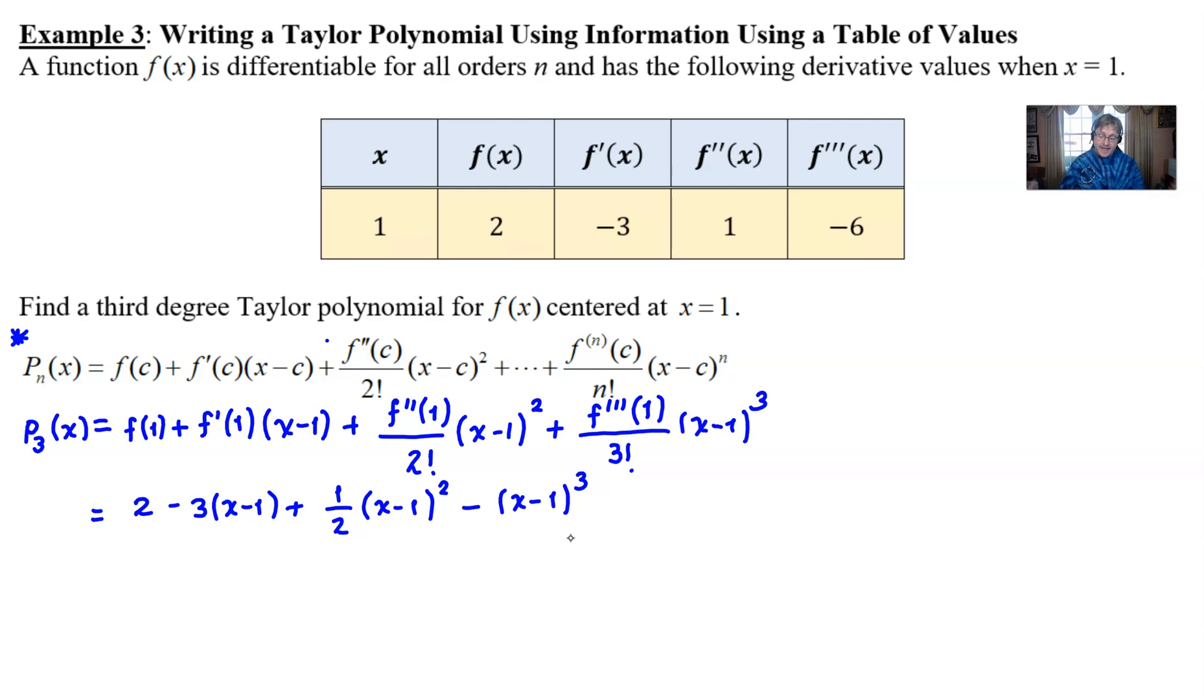And that's it. That's how you would write a Taylor polynomial given a table of values. It's a very easy way to do it. It's sometimes asked of you because it's quick. And it's testing your knowledge of the structure of the polynomial on the AP exam. So it's a good question.